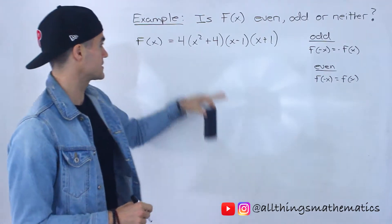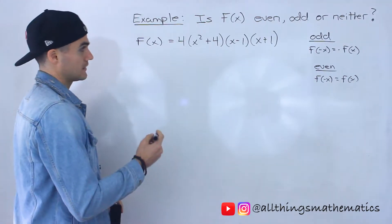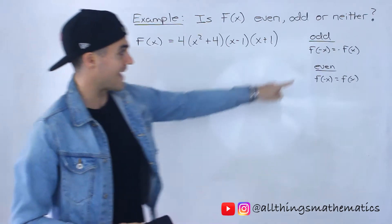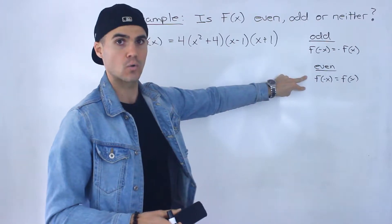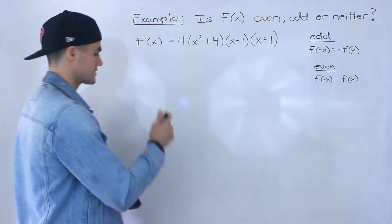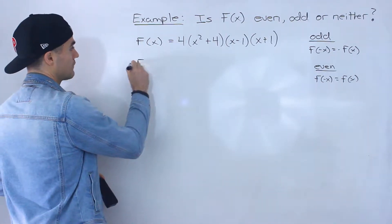So we got f of x here. Now what we got to find is an expression for f of negative x and then negative f of x, and then see if any of these equalities here hold. So let's start off with finding f of negative x.